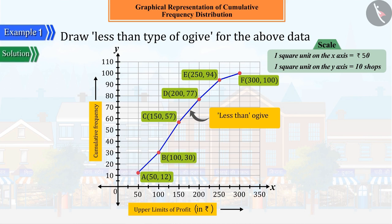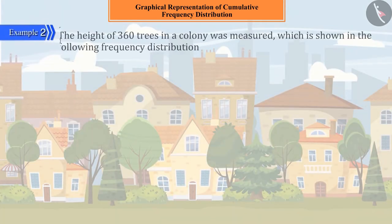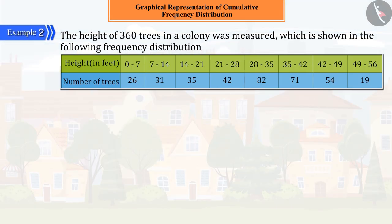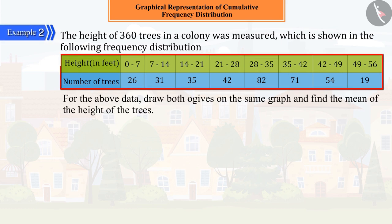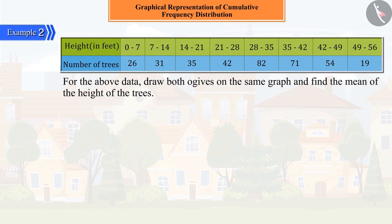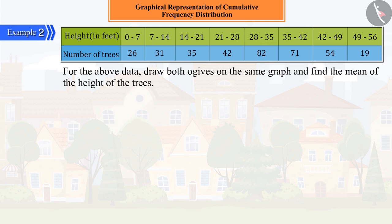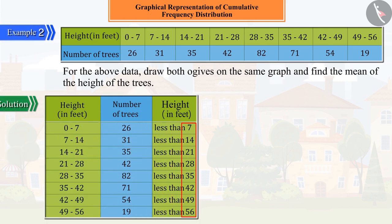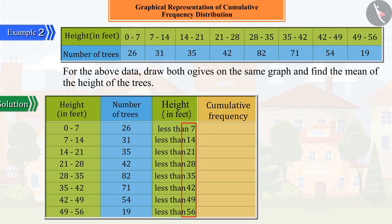Let's look at another example. In a colony, the heights of 360 trees were measured, which is represented in the following frequency distribution. Can you draw both ogives on the same graph for these figures and then find the median height of the trees? Let's see. With the help of the given distribution, we first construct a less than cumulative frequency distribution for less than type of ogive.